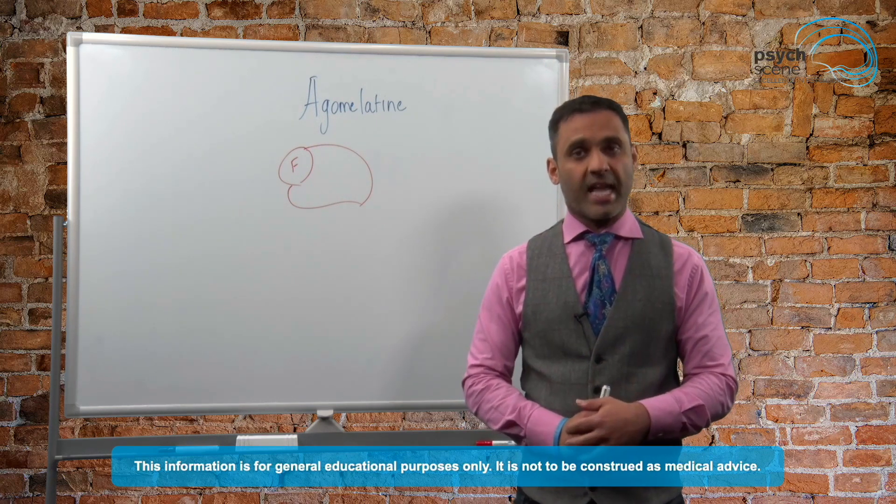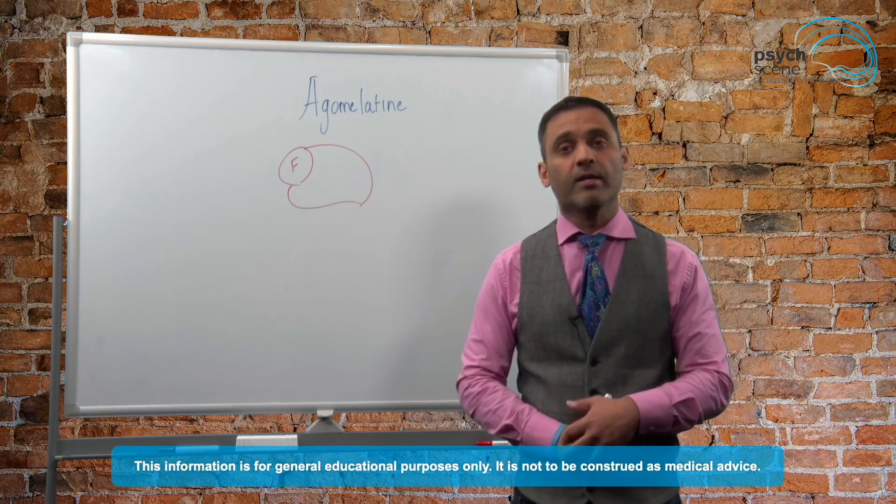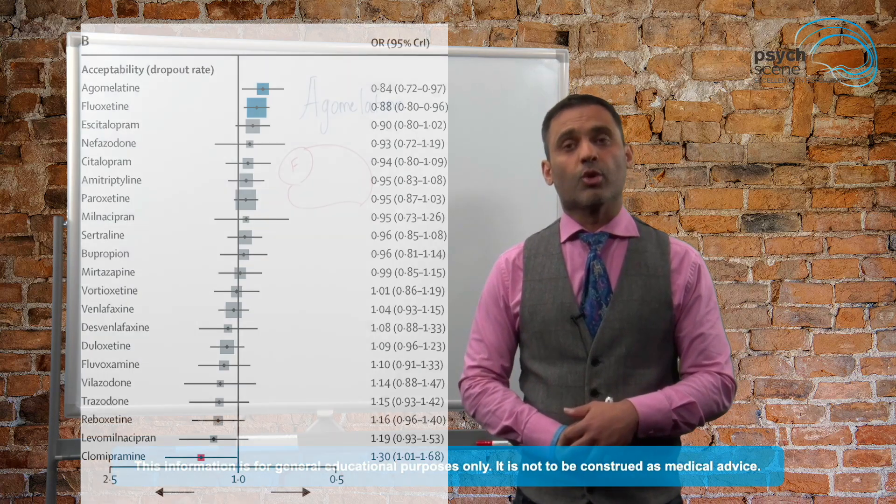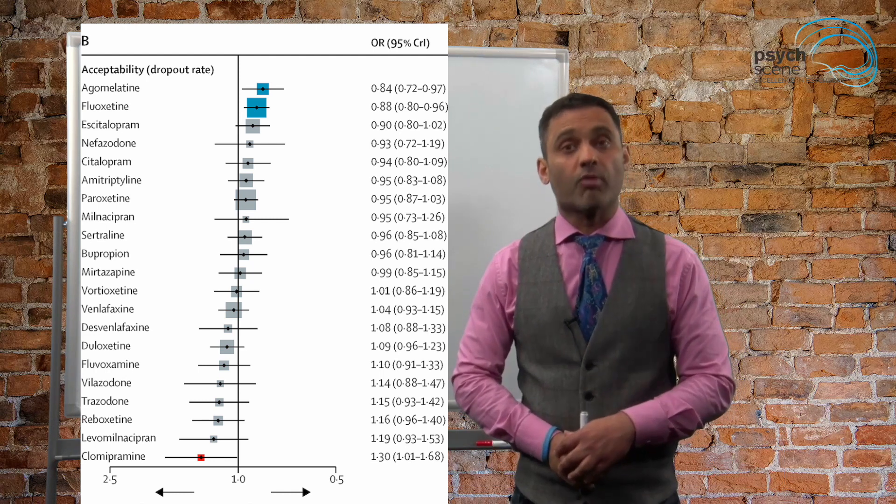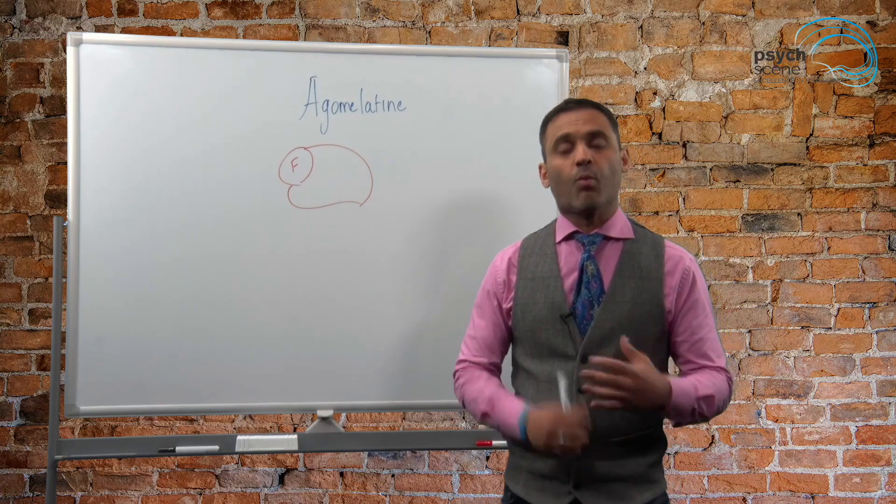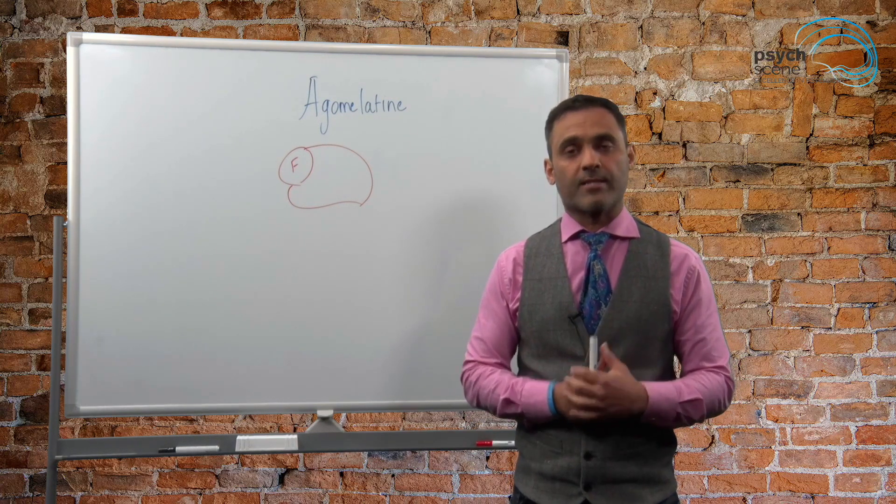In fact the Cipriani meta-analysis, which is the network meta-analysis, a really big one comparing the different antidepressants, showed that Agomelotine ranked right at the top when it came to tolerability. So why is that the case and what are the key properties of this antidepressant?